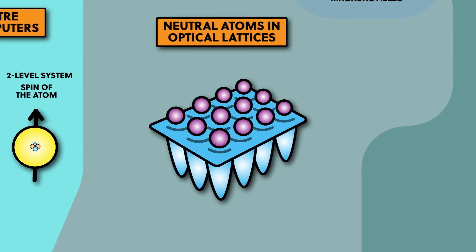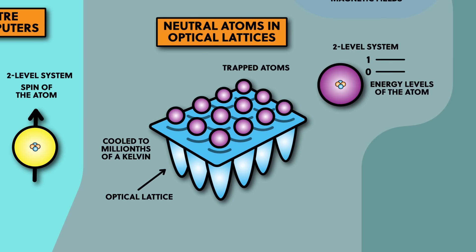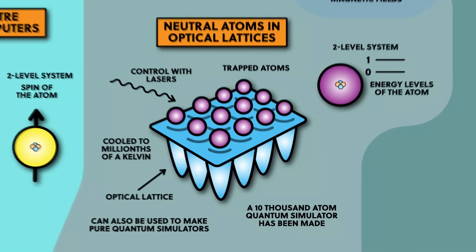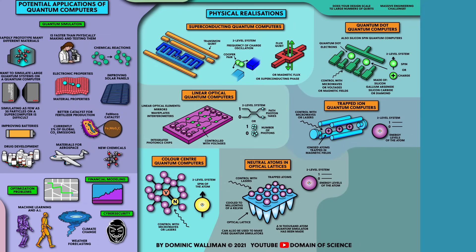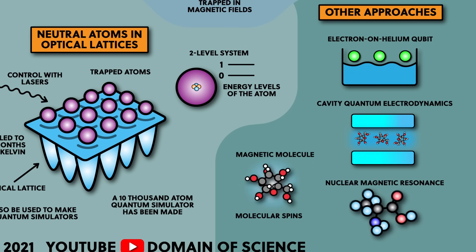The final approach is called neutral atoms in optical lattices. In this approach the qubits are atoms, and the design uses cold atom physics, capturing neutral atoms like caesium into an optical lattice — a crisscrossed arrangement of laser beams which form energy wells shaped kind of like an egg box. These atoms are cooled down with lasers to a few millionths of a kelvin, and there are a number of ways to encode the two level system the qubits are built from: either the hyperfine energy level of the atom, excited states, and they can also make use of Rydberg atoms. The atoms can be controlled and entangled with each other with lasers. They can also be used as quantum simulators as well as quantum computers — in fact a 10,000 atom quantum simulator has been made, but this doesn't look like a universal quantum computer. These are the main approaches, but some other qubit designs include electron on helium qubits, cavity quantum electrodynamics, magnetic molecules or molecular spins, and NMR quantum computers.